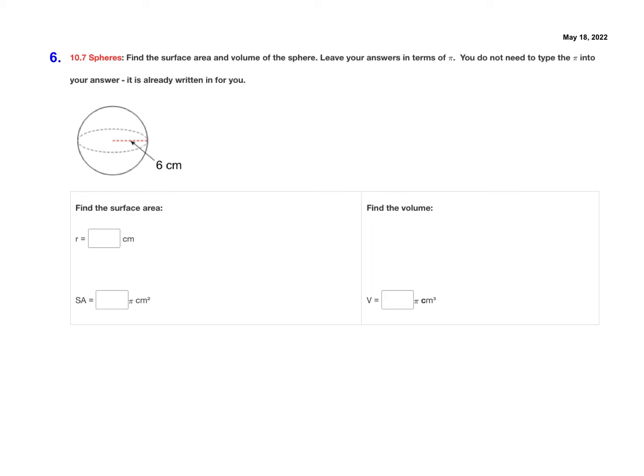For question number six, we move on to spheres. We learned about spheres in lesson 10.7. Let's find the surface area and the volume of the sphere, and we'll leave our answer in terms of pi.